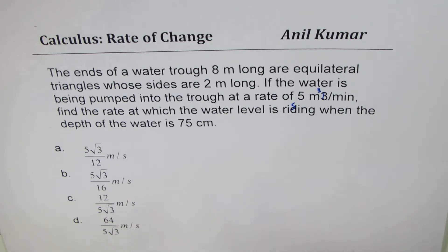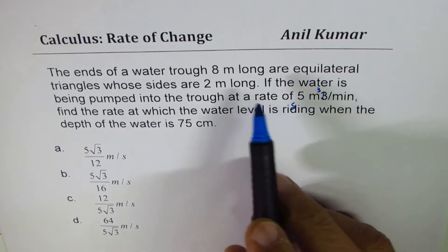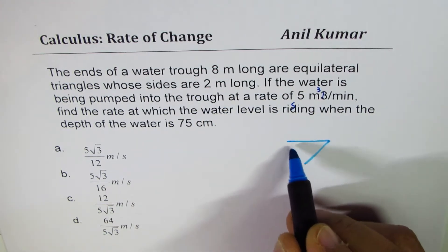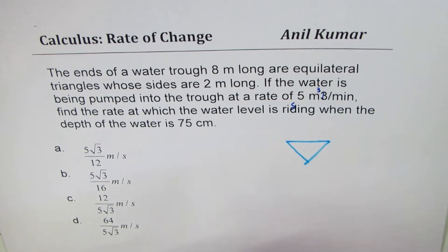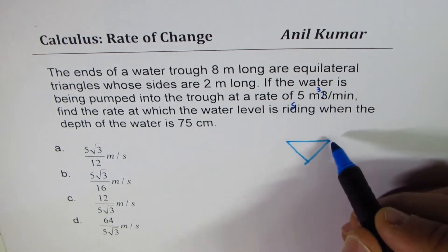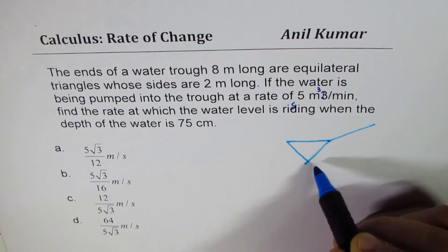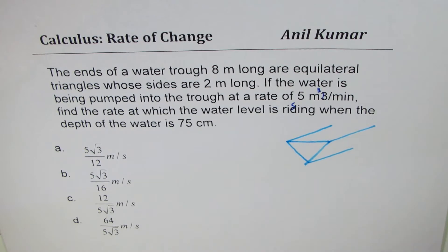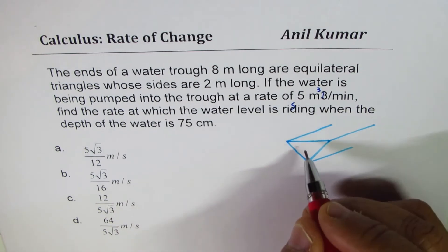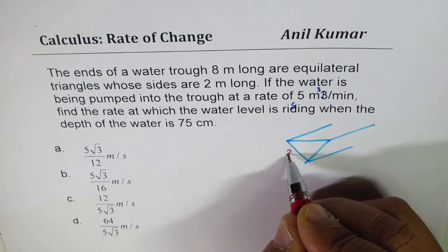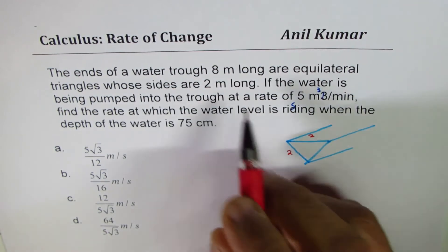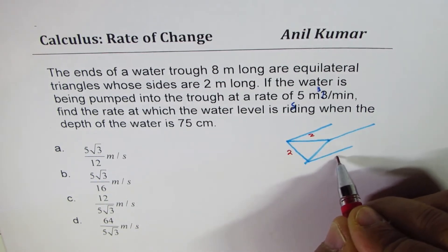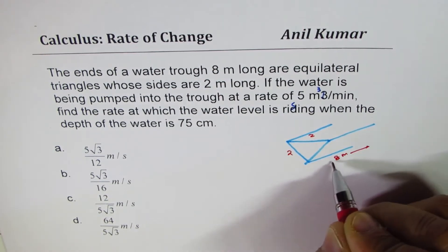Let us try to sketch this and then we'll solve. We're saying an equilateral triangle as the end, so let me make a triangle here and assume that this is an equilateral triangle. The trough has a length of 8 meters. Each side of the equilateral triangle is 2 meters — this is 2, this is 2, and this is 2 meters.